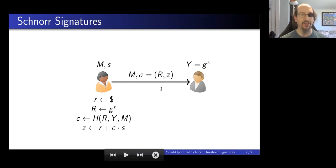And how does Victor check? Victor recomputes the challenge as the hash of R, Y, and M, and then just checks this equation. If you just stare at this equation and take G to both sides, you'll see that this equation should check out. So this is just standard Schnorr signatures.